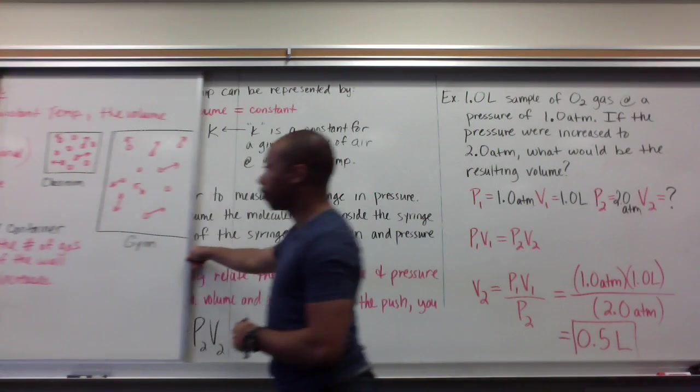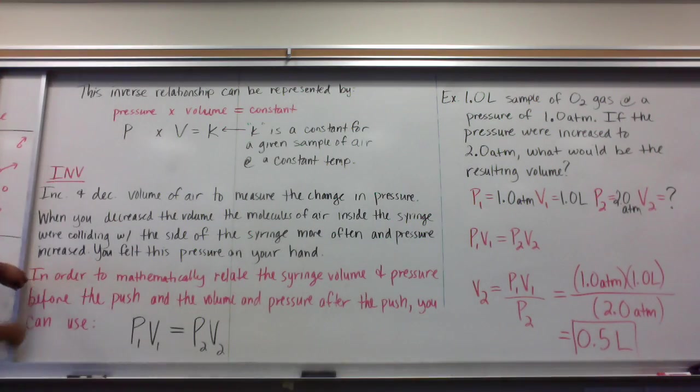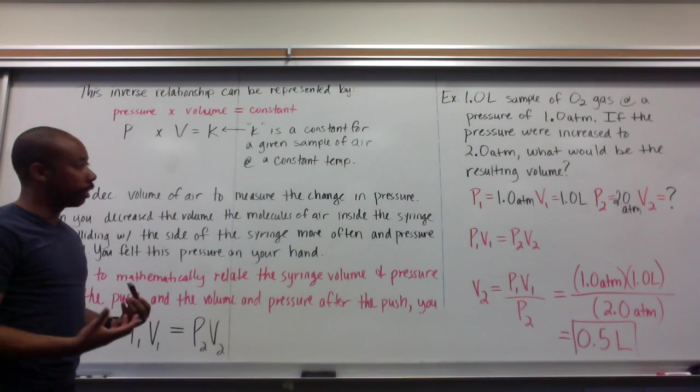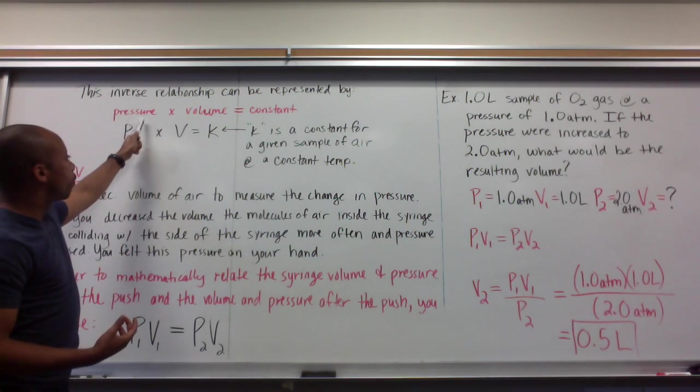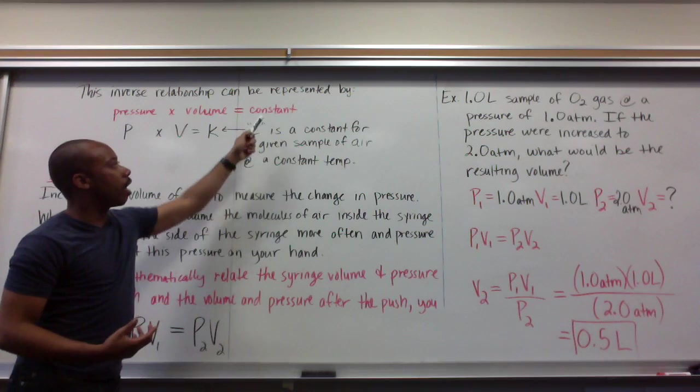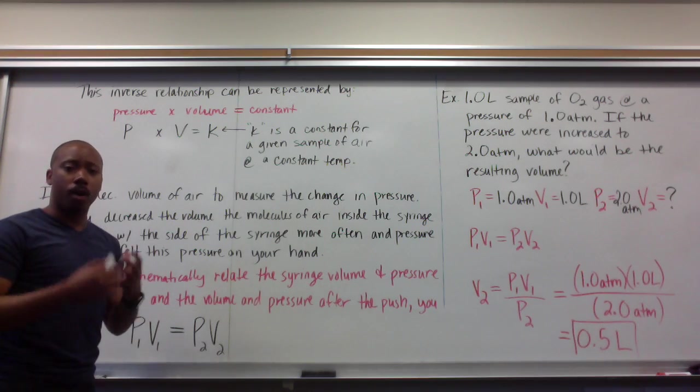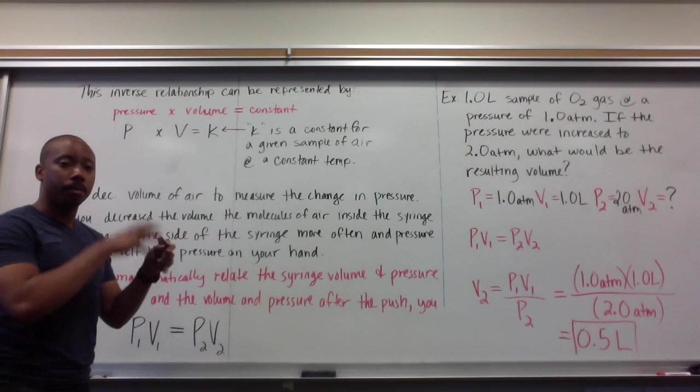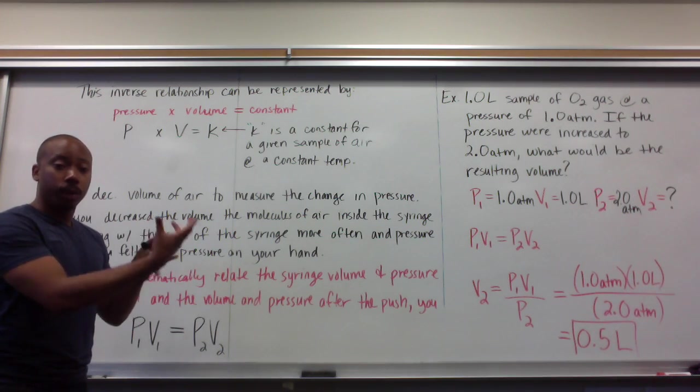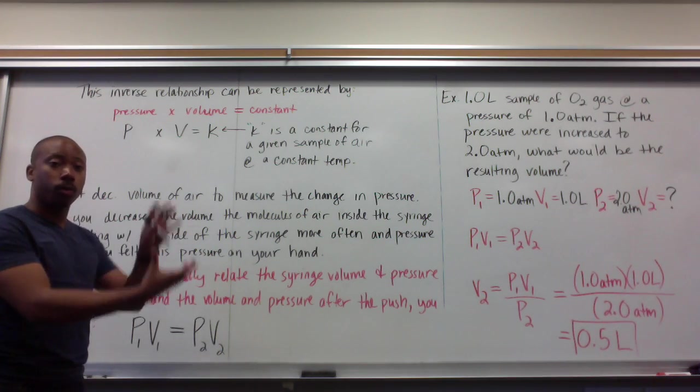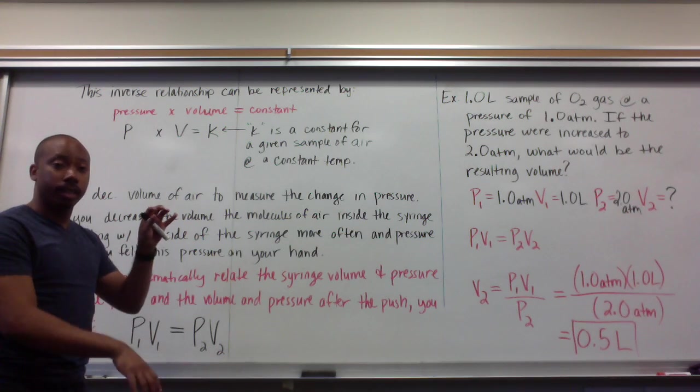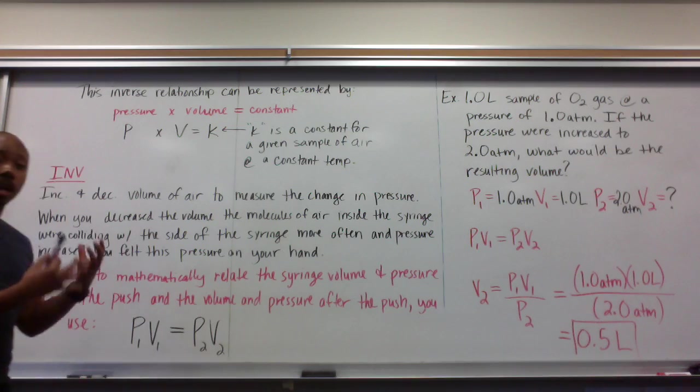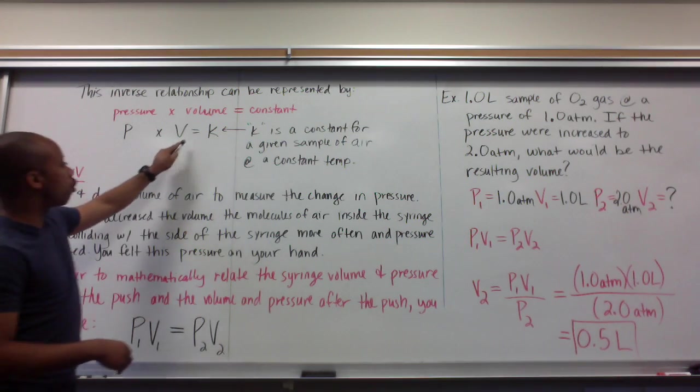Now, this gives us something. That inverse relationship that we've been talking about can be represented mathematically this way. The pressure times the volume is a constant. This is kind of like when we're talking about waves. So the speed of light is equal to the wavelength times the frequency. Frequency and wavelength were inversely proportional. As one went up, the other had to decrease because the speed of light is constant. It's the same kind of concept here.